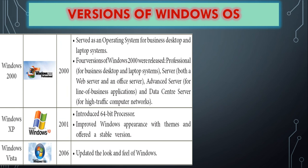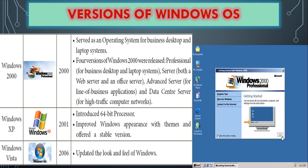Windows 2000 served as an operating system for business desktop and laptop systems. Four versions were released: Personal, Professional, Server, Advanced Server, and Data Center Server. Professional was the most commonly used version. The server version was used for web server purposes, Advanced Server for network business use, and Data Center Server for high-traffic computer networks. Windows 2000 also introduced movie maker for video editing.